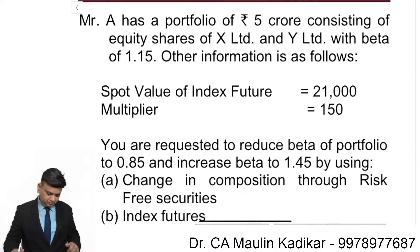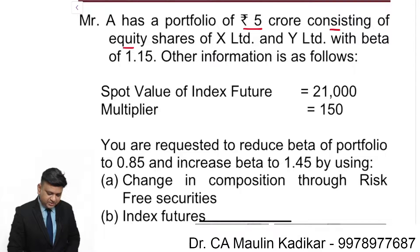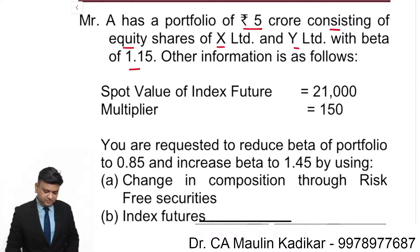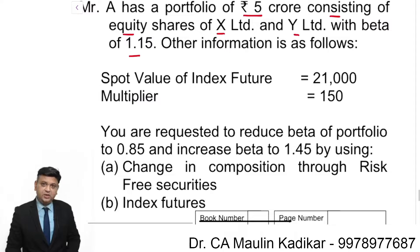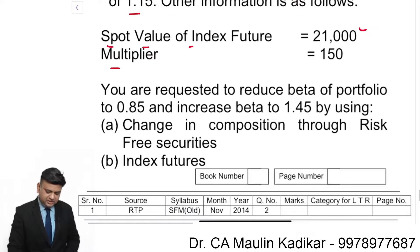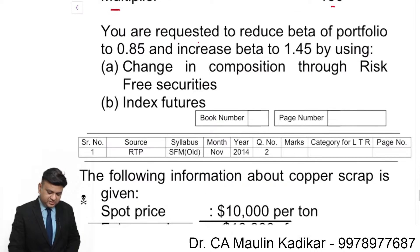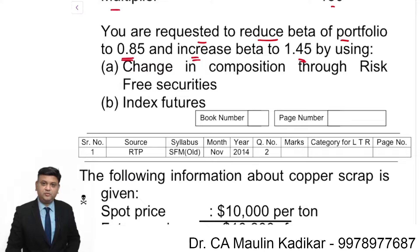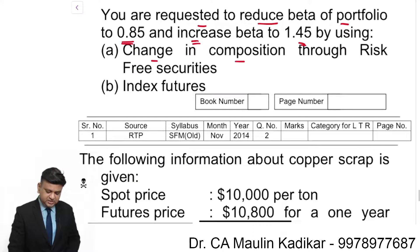Next question. Mr. A has a portfolio of rupees 5 crore consisting of equity shares of X Limited and Y Limited with a beta of 1.15. Spot value of the index futures is 21,000. You are requested to reduce the beta of the portfolio to 0.85, and to increase the beta of the portfolio to 1.45 by using a change in composition. Highlight the portion through risk-free securities and through index futures.